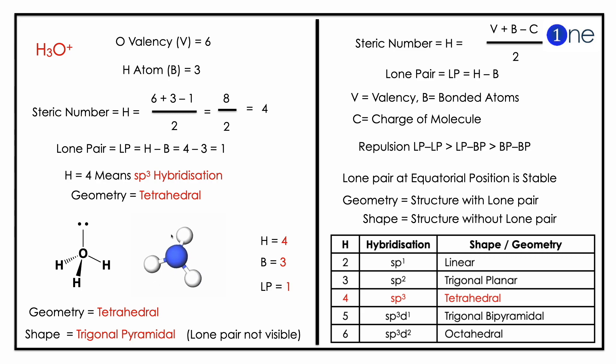First we find the valence. Oxygen valence is 6. The bonded hydrogen atom is 3. If you substitute in the steric number...